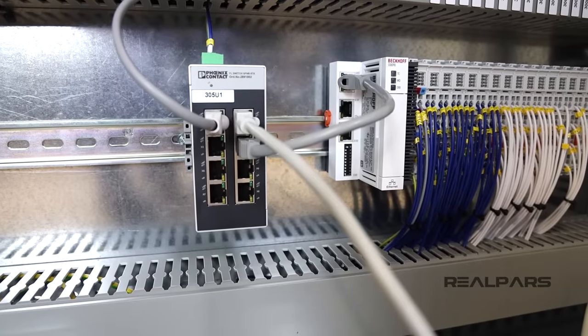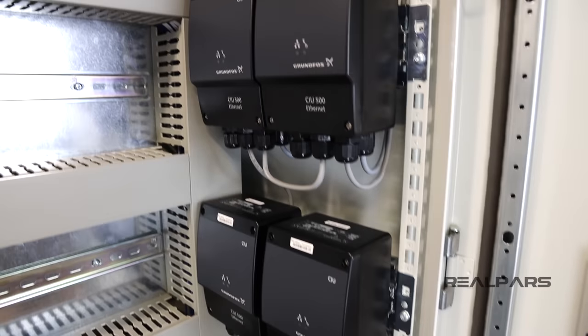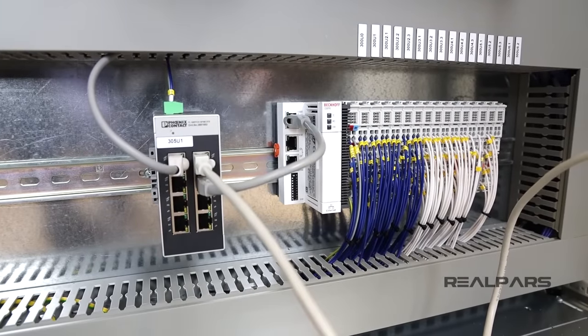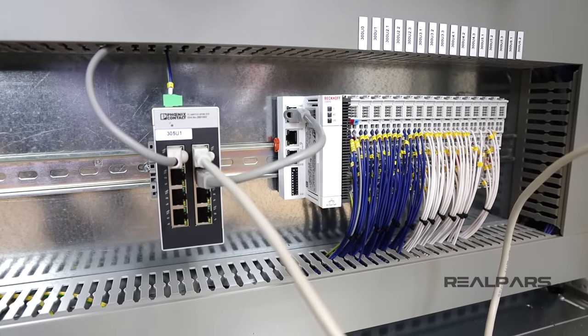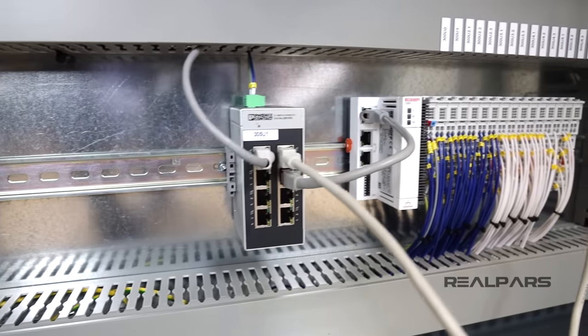So, the PLC is connected to this Ethernet switch first, then the switch is connected to these interface units, and then the other end of the units are connected to the pumps. Some field devices are connected to the PLC directly via wires, and some others are connected via Ethernet cables.